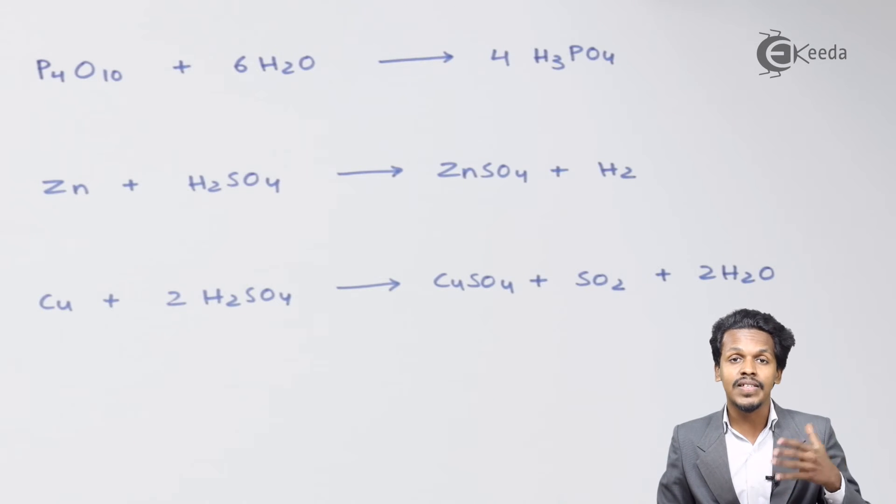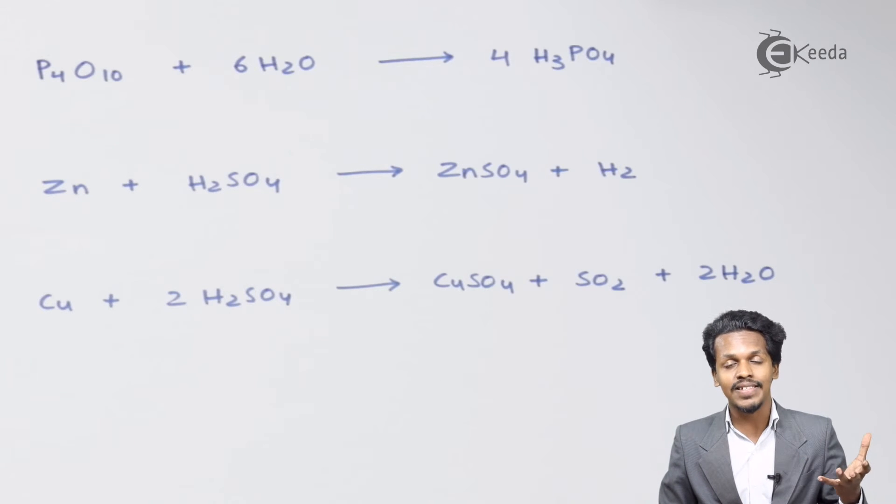In the previous reaction we discussed that HCl is also an acid that could be produced because of H2SO4. So now this is the example.